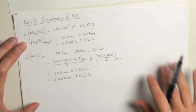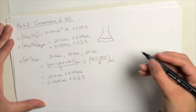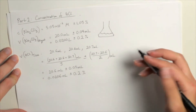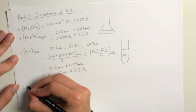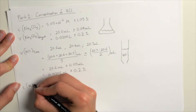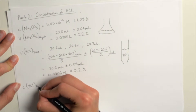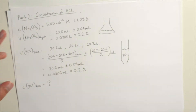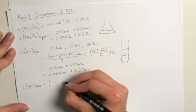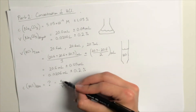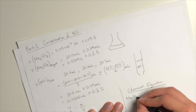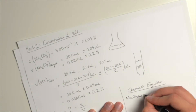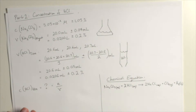We don't know the concentration of the hydrochloric acid, but the way we would calculate it is to find out how many moles we need per volume. To work out the moles, we use the molar ratio from the chemical equation, so we need to write up the chemical equation.